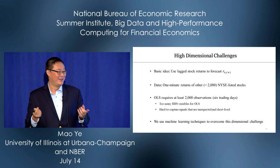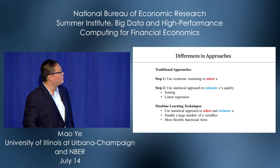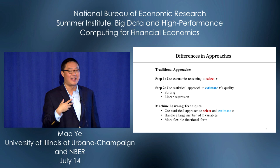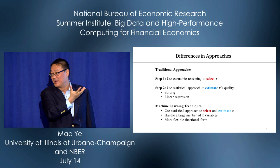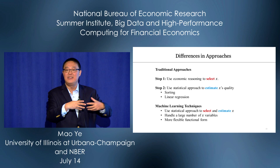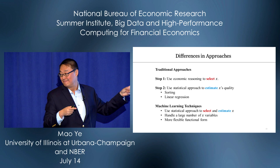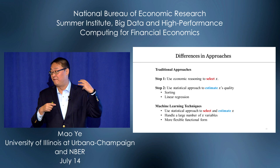I'll summarize the differences in approach. The traditional approach uses economic reasoning to select a predictor X, then uses statistics to estimate whether X is good — via sorting or linear regression. Machine learning is different: it uses statistical methods to both select and estimate X. It can handle a large number of predictors and sometimes has more flexible functional forms.